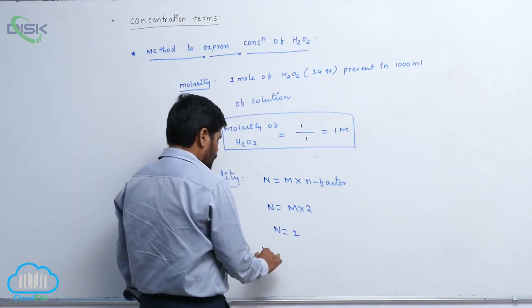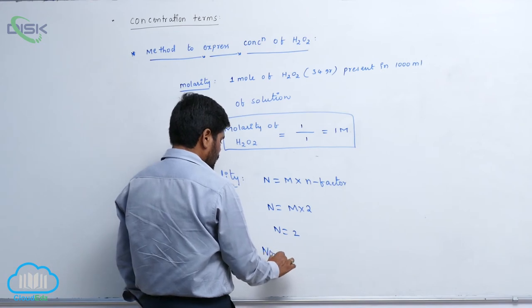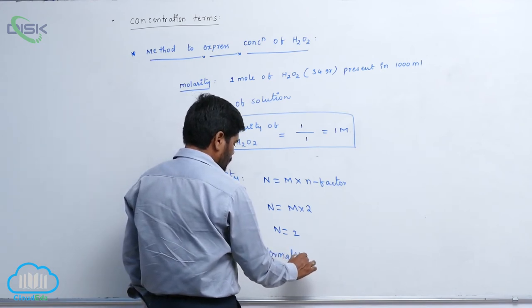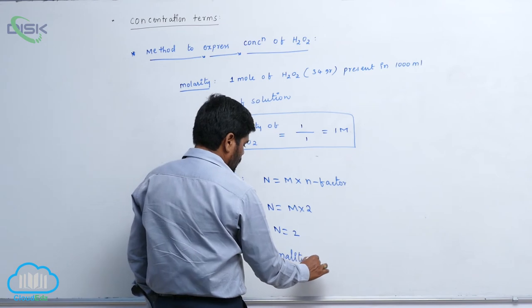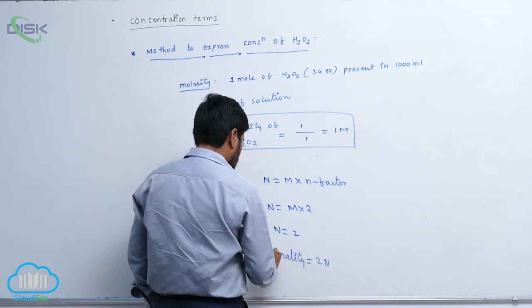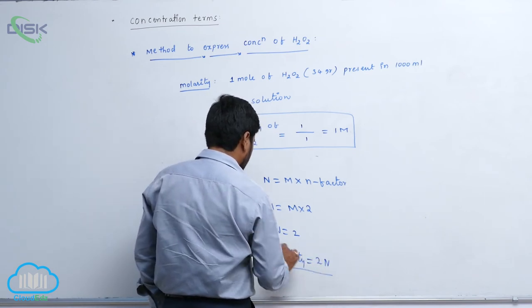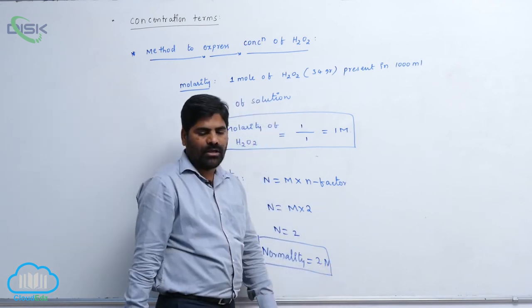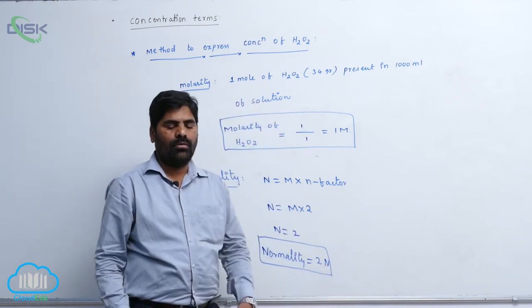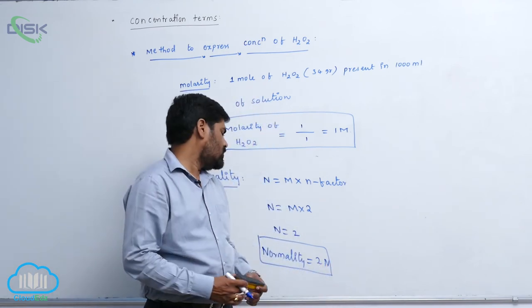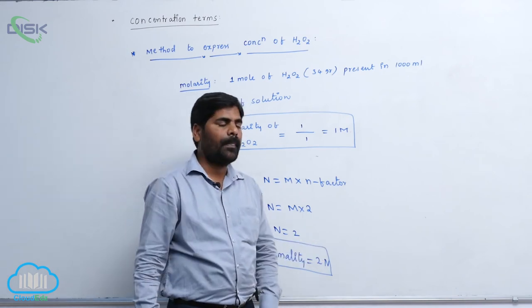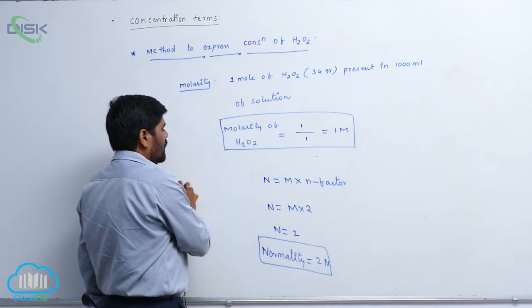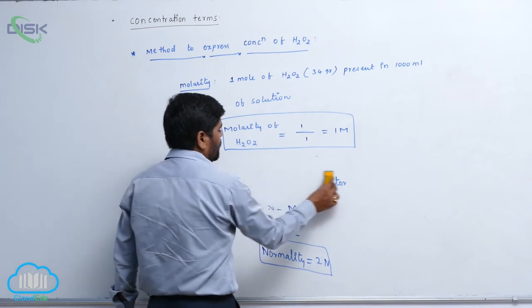So normality equals 2N. That is the reason why it is known as a 2 normal solution. This is about the relation between molarity and normality.